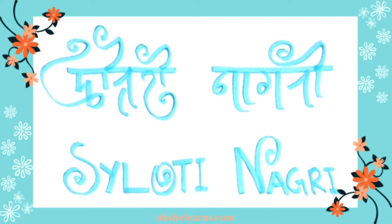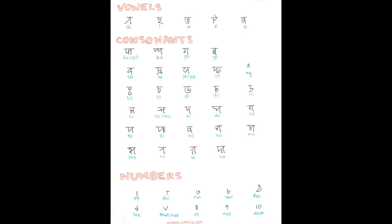I will have the link to this in the description below. I made this by hand because the traditional Sylheti numbers are not supported by Unicode, so I had to make it by hand. This is by far, in my opinion, the most accurate representation of the selection of Nagri alphabets and the numbers, as well as the pronunciations. Because the numbers are not Unicode supported, they can't be typed, so I made this list by hand — the most accurate list I could make.